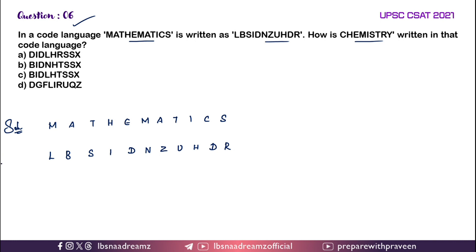Find the relation between the given code and the word. After L, M will come — S, D, H, I — so they have given the relation: after D, E will come; similarly after M, N will come. Got it.